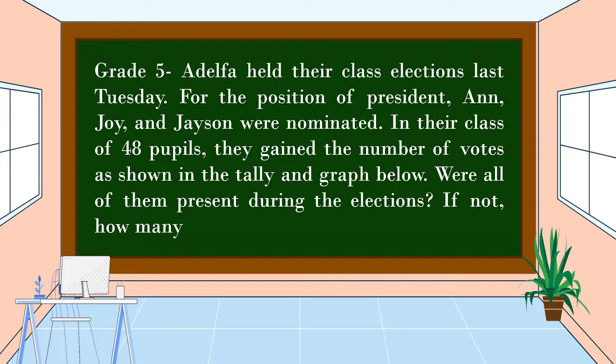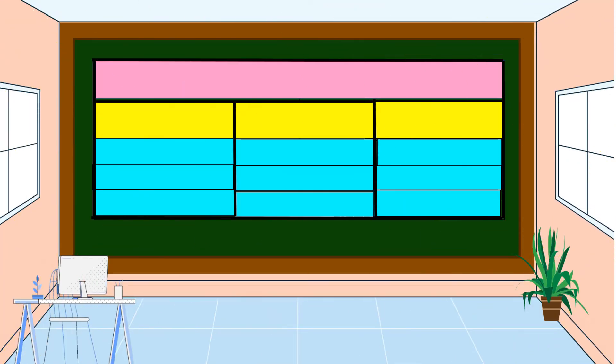Were all of them present during the elections? If not, how many pupils were absent? This is the tally of Grade 5 Adelpha's number of votes for president.